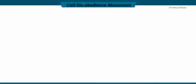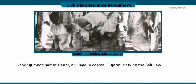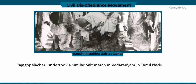Mahatma Gandhi started the Civil Disobedience Movement on 12 March 1930 with a salt satyagraha, also known as the Dandi March. Gandhiji, with other followers, set off on a long march on foot from Sabarmati to Dandi, a village on the Gujarat coast. He made salt, thus disobeying the salt laws. Several prominent leaders also undertook the salt satyagraha.